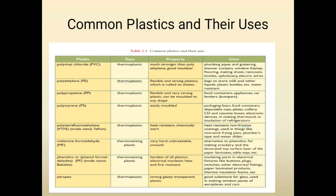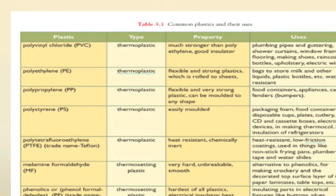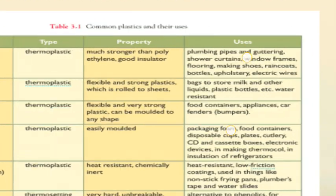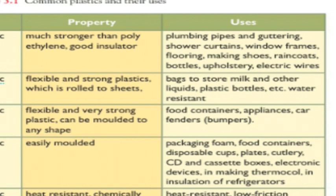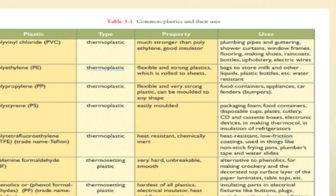The next topic is common plastics and their uses. The first plastic is polyvinyl chloride (PVC), which is a thermoplastic. It is much stronger than polythene and is a good insulator. PVC is used in plumbing pipes, shower curtains, window frames, flooring, shoes, raincoats, bottles, upholstery, and electric wires.